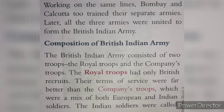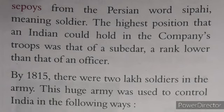The British Indian Army consisted of two troops: the Royal Troops and the Company's Troops. The Royal Troops had only British recruits. Their terms of service were far better than the Company's Troops, which were a mix of both European and Indian soldiers. The Indian soldiers were called Sipoys, from the Persian word 'sipahi,' meaning soldiers.